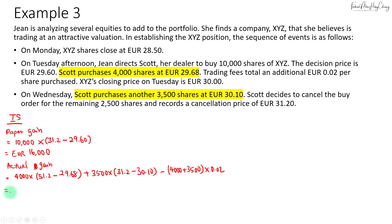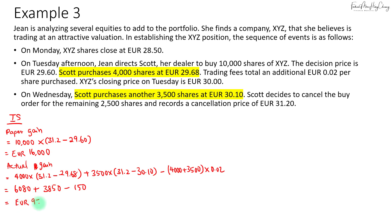For the first tranche: 4,000 times (31.20 minus 29.68) gives a gain of 6,080 euros. For the next tranche of 3,500 shares, that gives 3,850 euros. Lastly, the commission is 150 euros. So the total actual gain is 9,780 euros.